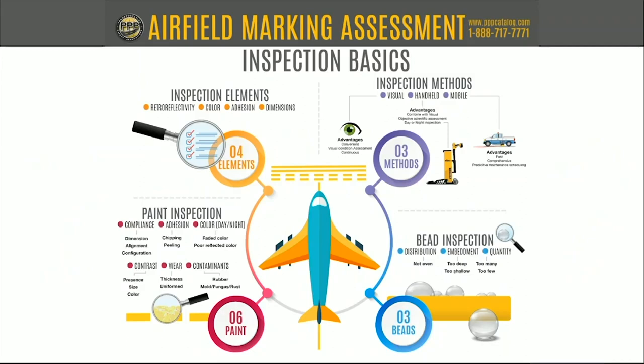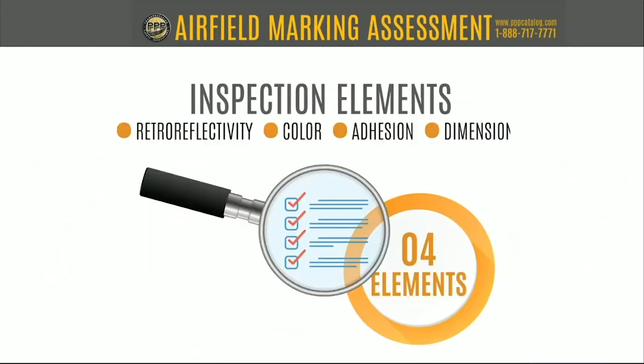Let's have Mike get us started with the four inspection elements in the airfield. One of the biggest issues we see on airfields is probably reflectivity — basically how the beads are either embedded or distributed, and how they're performing from a reflectivity standpoint. The instruments we've been discussing have been pointing those things out. Embedment and distribution are probably the two components most often not as good as they could be.